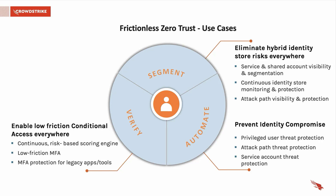The last key capability is the ability to verify. Whether it's a legacy application, a critical server, or a workstation, CrowdStrike Zero Trust can easily add MFA based on policy rules defined by identity, behavior, and risk. Just as important is the ability to understand your users enough to know when to trigger MFA, and when to trust the user and not trigger MFA if it's not needed.